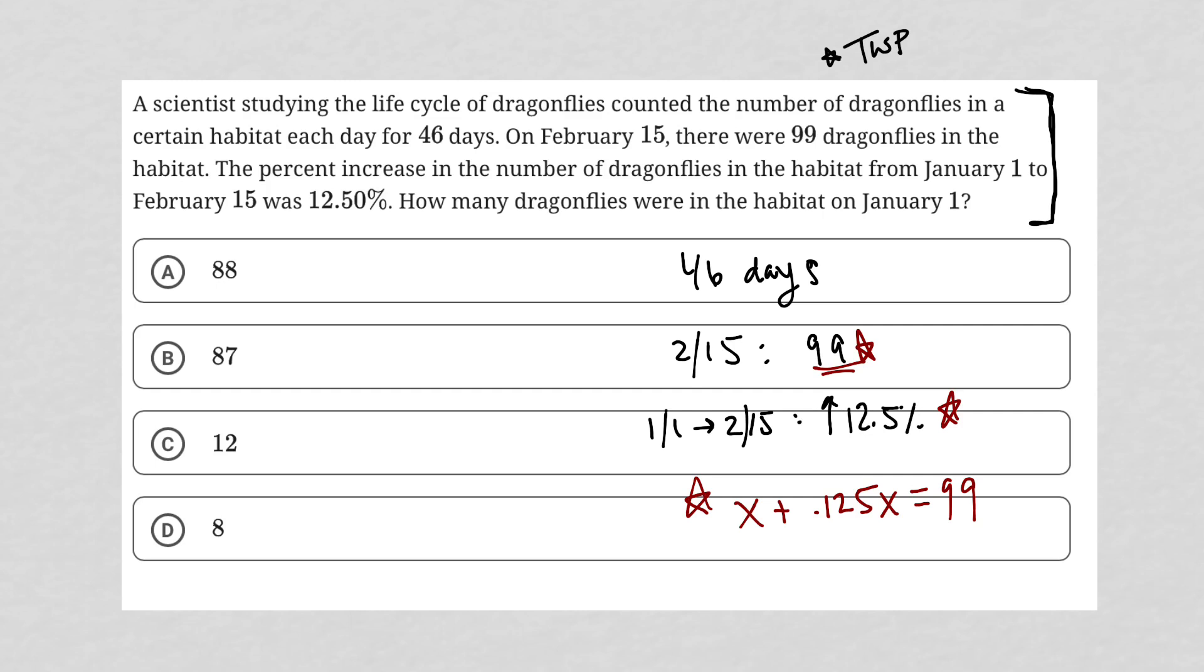The next sentence says, how many dragonflies were in the habitat on January 1st? Exactly. The X value represents the number of dragonflies in the habitat on January 1st. And now I just have an equation I can simplify. So X plus 0.125X is 1.125X equals 99.